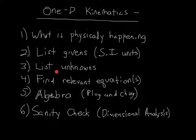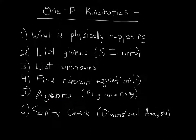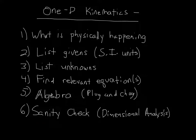Step three is to list the unknowns — what values is the question actually asking you to find? Step four is to find any relevant equation or equations you might use to get to that unknown value. Step five is the algebra, or plug and chug, where you take your numbers and start calculating. Step six is a sanity check using dimensional analysis to make sure your answer makes sense.